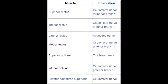The inferior rectus muscle is innervated by cranial nerve 3, the oculomotor nerve. The inferior oblique muscle is also innervated by cranial nerve 3, the oculomotor nerve. And the lateral rectus muscle is innervated by cranial nerve 6, the abducens nerve.